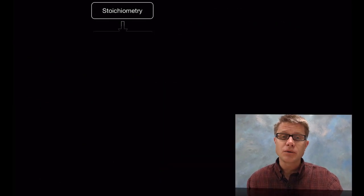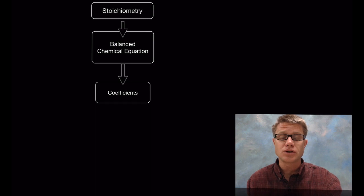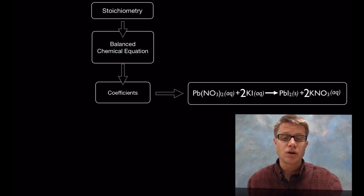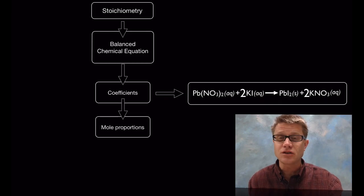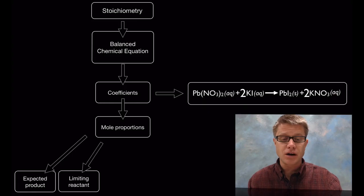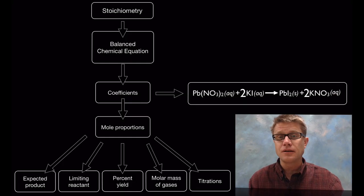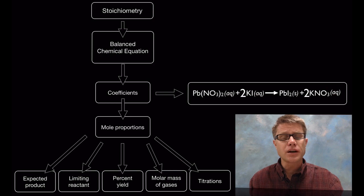Stoichiometry allows us to measure chemical reactions, but in order to do it we have to have a balanced chemical equation. The coefficients in that equation are going to show us the number of moles — that's the mole proportion. This one idea is so powerful. If you understand it you can answer so many different problems. But if you don't get it, then figuring out expected product, limiting reactants, percent yield, molar mass of gases, and titrations are going to be really confusing. The one thing that ties them all together is that the coefficients in an equation represent the number of moles. As you watch this video, look for what ties all five of these together.